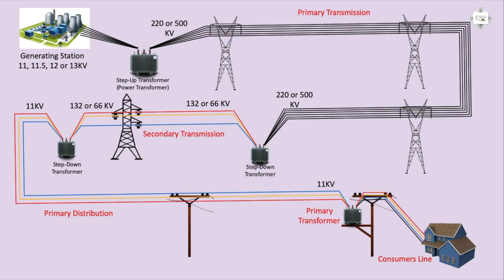Customer line supply — 440 V or 220 V supply via three-phase line. Three-phase or neutral: red, yellow, blue, and neutral line. Red to neutral equals 220 V, yellow to neutral equals 220 V, blue to neutral equals 220 V. Line-to-line (red-yellow-blue) equals 440 V. Full electric system: generation, transmission line primary, secondary, primary distribution, and primary transformer to customer line supply.